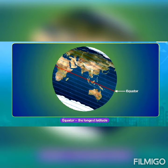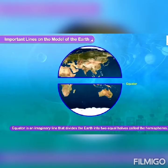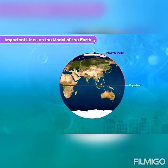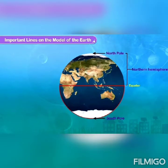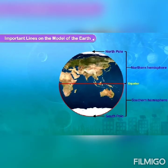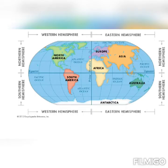The equator is the longest line of latitude. It is an imaginary line that divides the earth into two equal halves. The half lying to the north of the equator is known as the Northern Hemisphere, and the southern half is known as the Southern Hemisphere. Just as the equator divides the earth into north and south, the prime meridian divides the earth into the Western and Eastern Hemispheres.